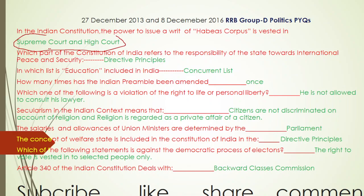The third question: In which list is education included in India? The correct answer is the Concurrent List — education is included in the Concurrent List.